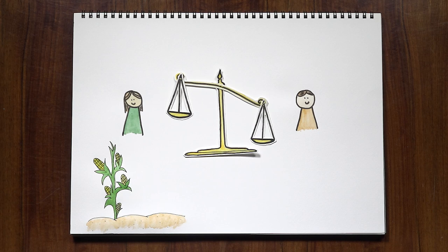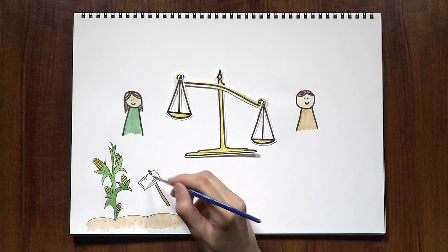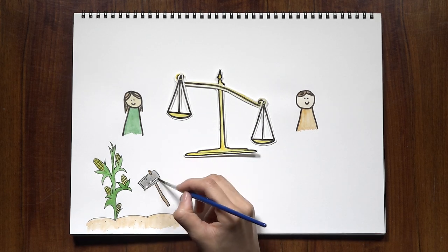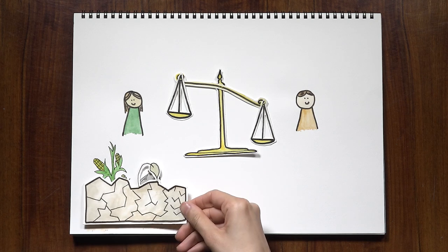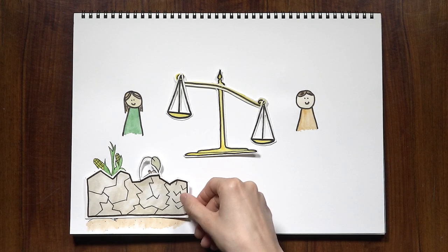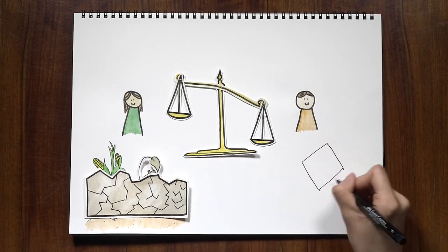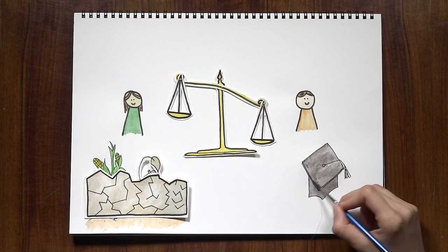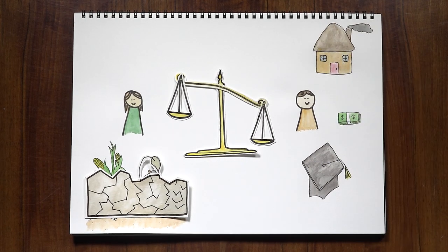men work away from the home while women cultivate tiny plots of land without irrigation to produce food for their families. Climate change directly affects their ability to grow crops. On top of that, women often face barriers to basic education, employment, and to owning property.